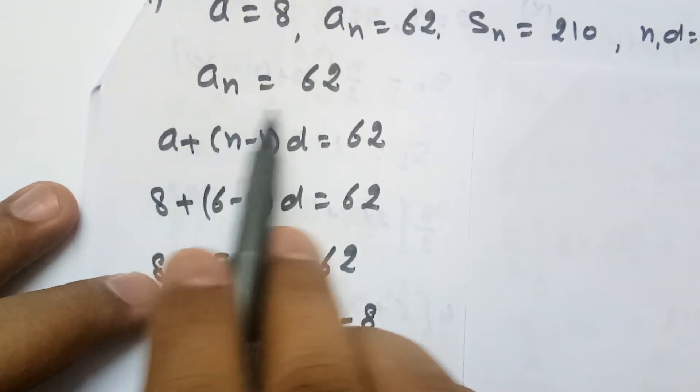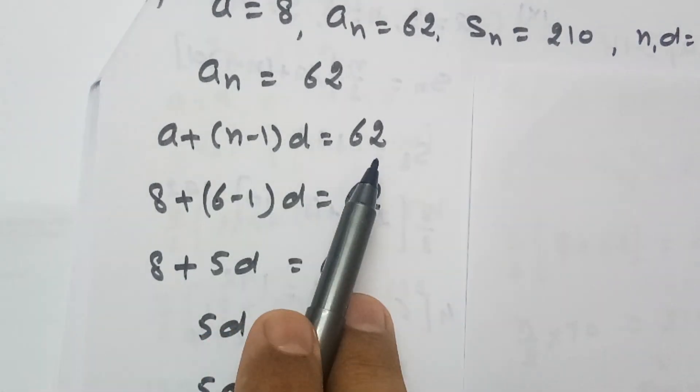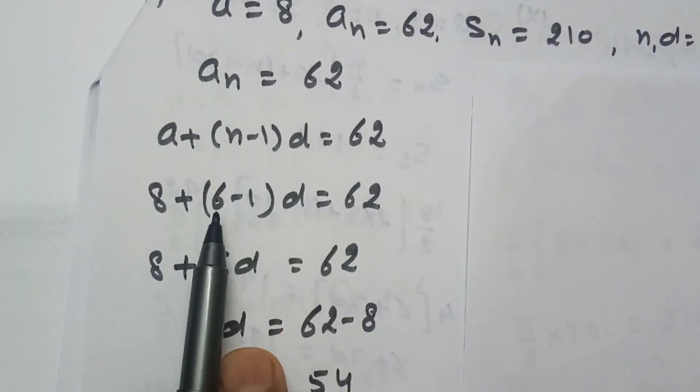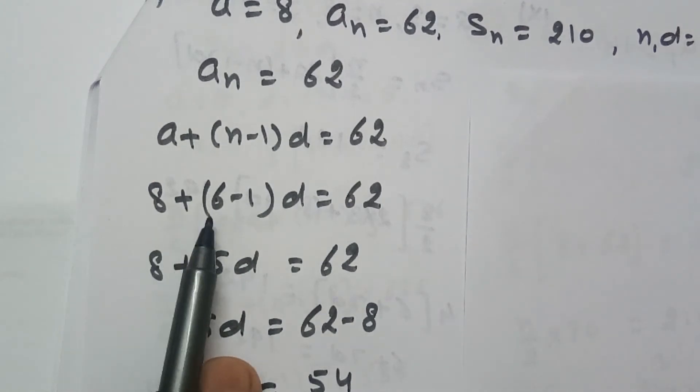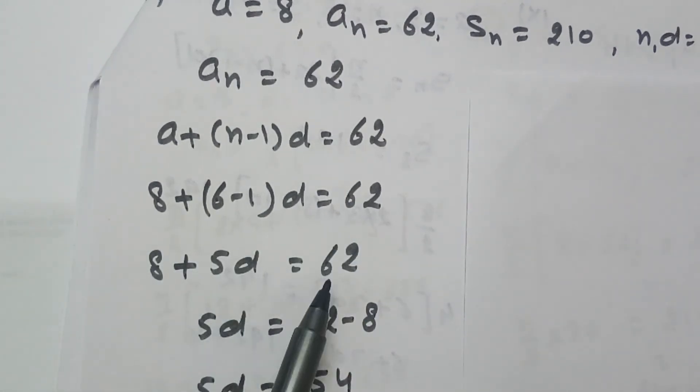Because it is given AN equals to 62, which equals A plus N minus 1 into D equals to 62. And because N is 6, we have calculated. So 8 plus 6 minus 1 into D equals to 62. 8 plus 5D equals to 62.